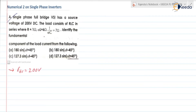Next, the load consists of RLC components: R is equal to 1 ohm, omega L is equal to 6 ohm, and 1 by omega C is equal to 7 ohm.